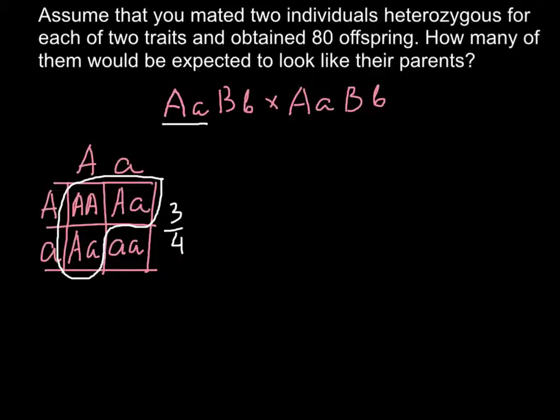And as you see, three quarters, three out of four, would produce the same phenotype as capital A small a. I include here two that are exactly the same and I also include this capital A capital A because the phenotype would be the same. And the question is expected to look like their parents. The question is not about the same genotype. The question is about the same phenotype.